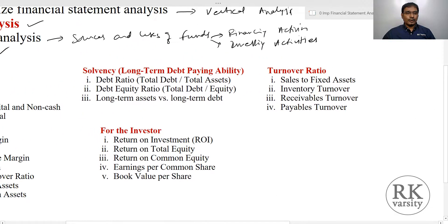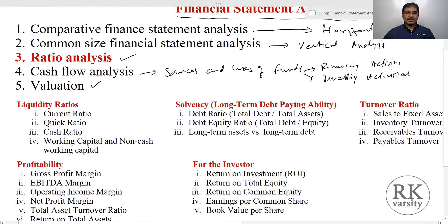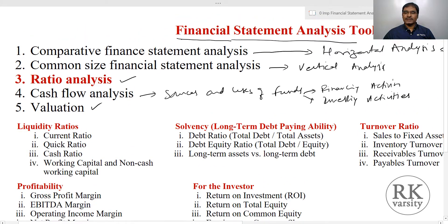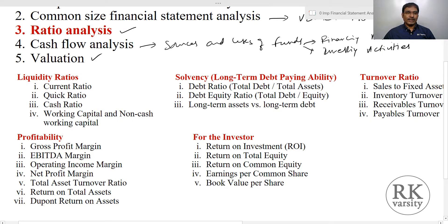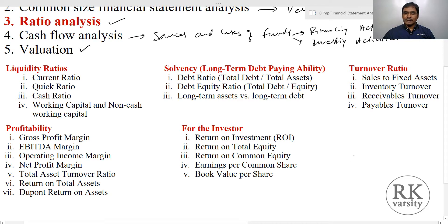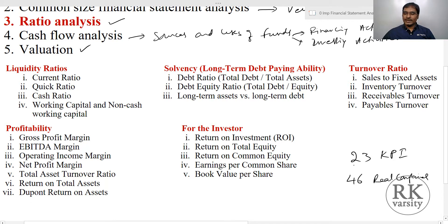Now, the very important tool is ratio analysis. This course is focused on ratio analysis among the five financial statement analysis tools. Ratio analysis measures the relationship between each and every item of the balance sheet, profit and loss account, assets, liabilities, and so on. In this course, we are covering a total of 23 key performance indicators using annual reports of 46 real companies. These 23 key performance indicators are classified under five heads.